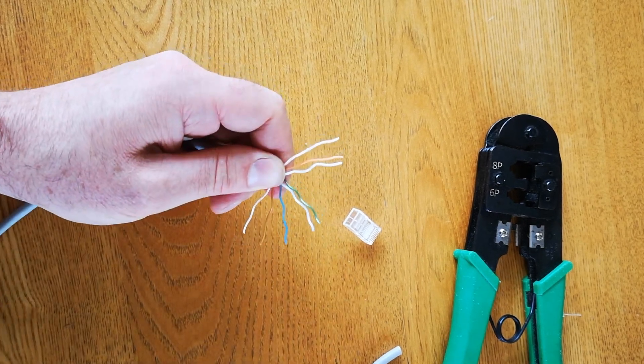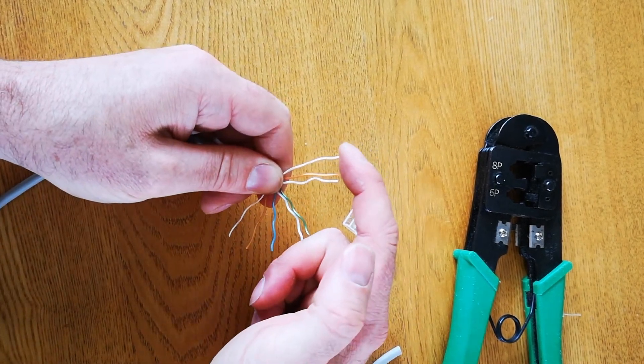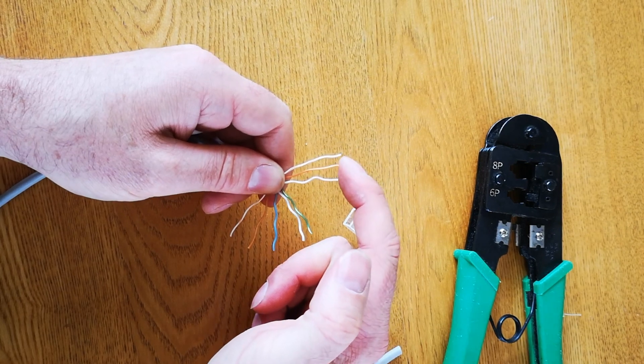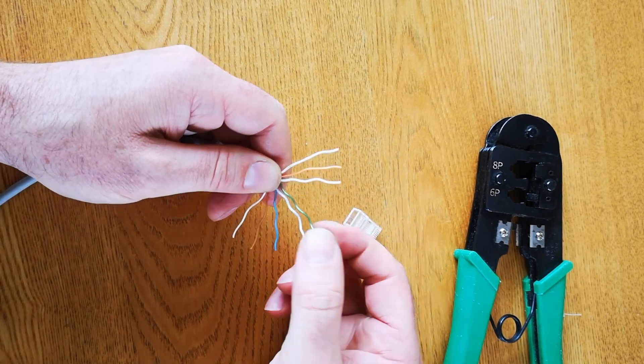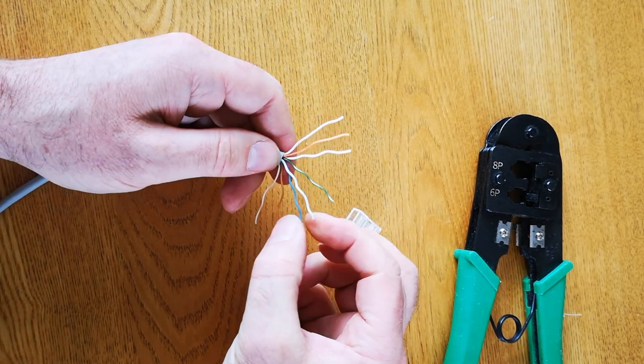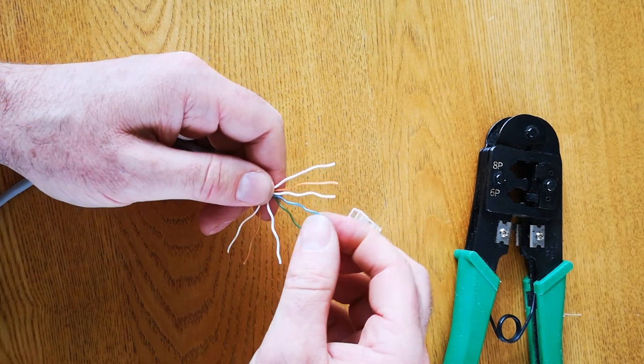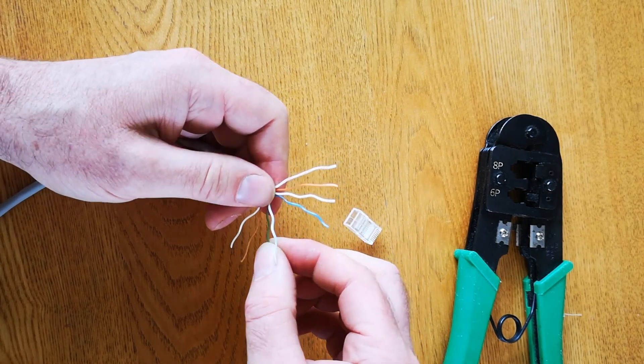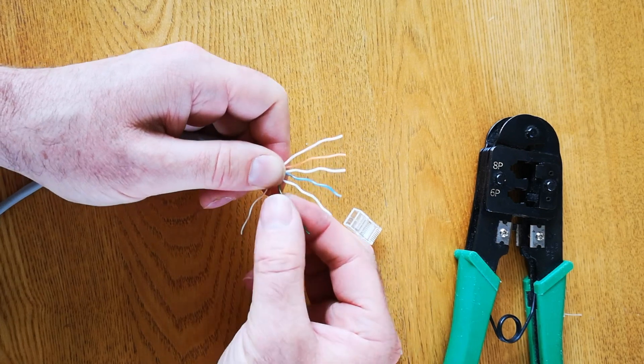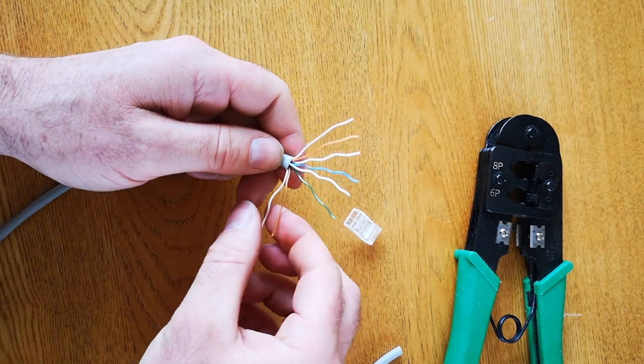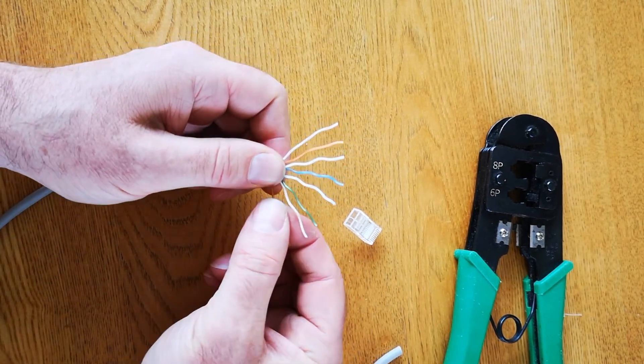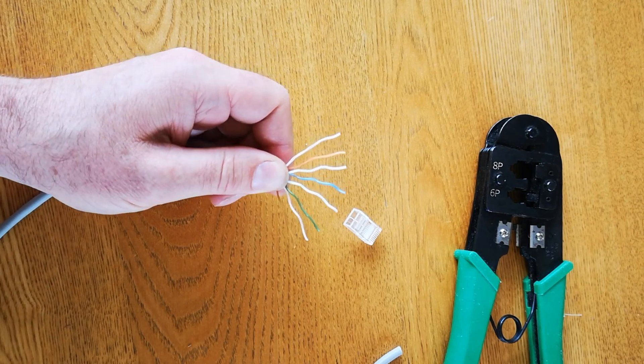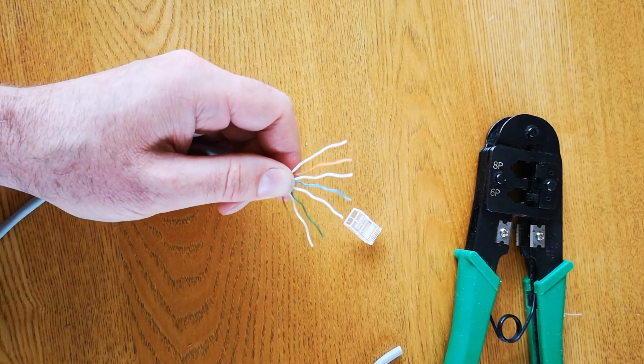So we'll start to assemble the correct order. So we need orange stripe first, and then orange. And then green stripe. And then blue. So the blue one's going to come in here. And then you're going to need blue stripe. And then green. And brown stripe. And brown. And that is the order for a standard RJ45 connector.